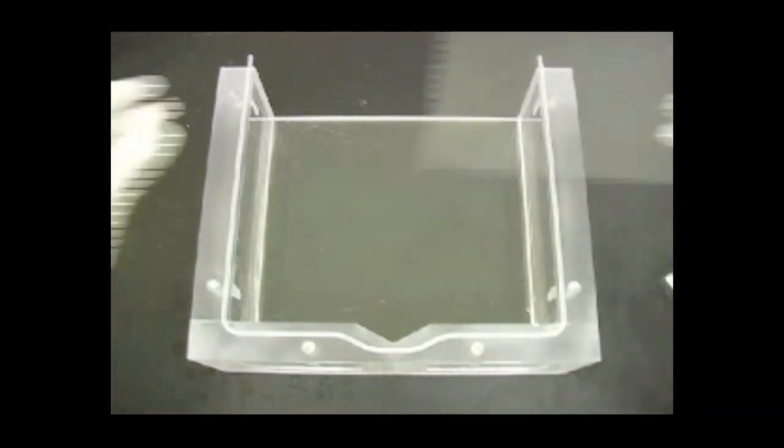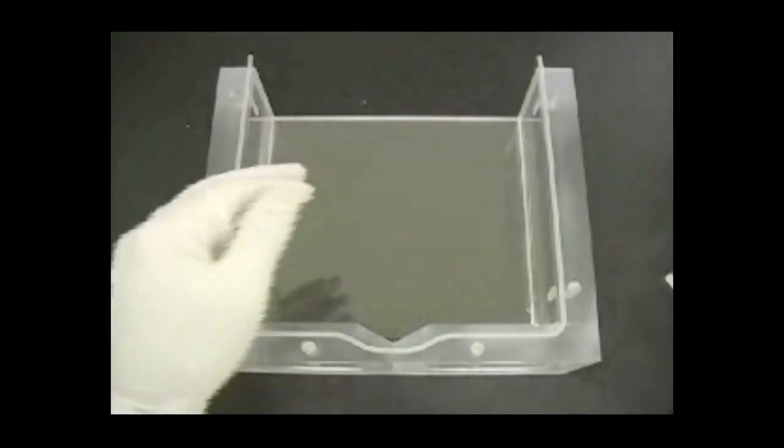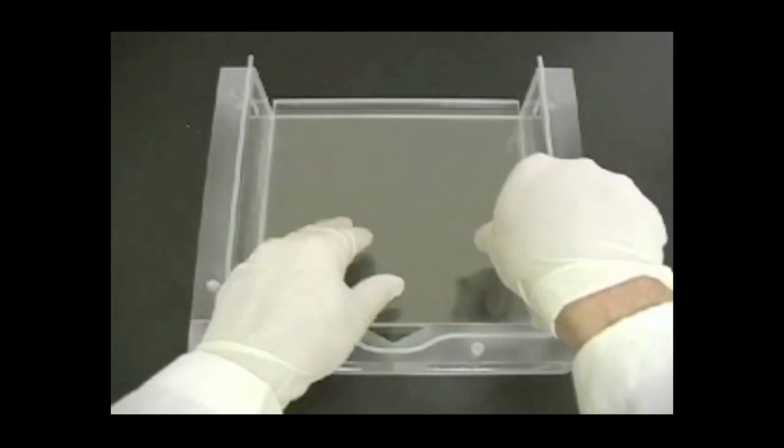If you are casting less than 12 gels, use acrylic blocks to fill the space in the chamber. We will be casting 4 gels here.